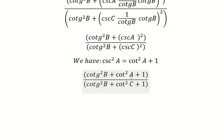Next, cotangent B squared plus one we can transform to cosecant B squared.